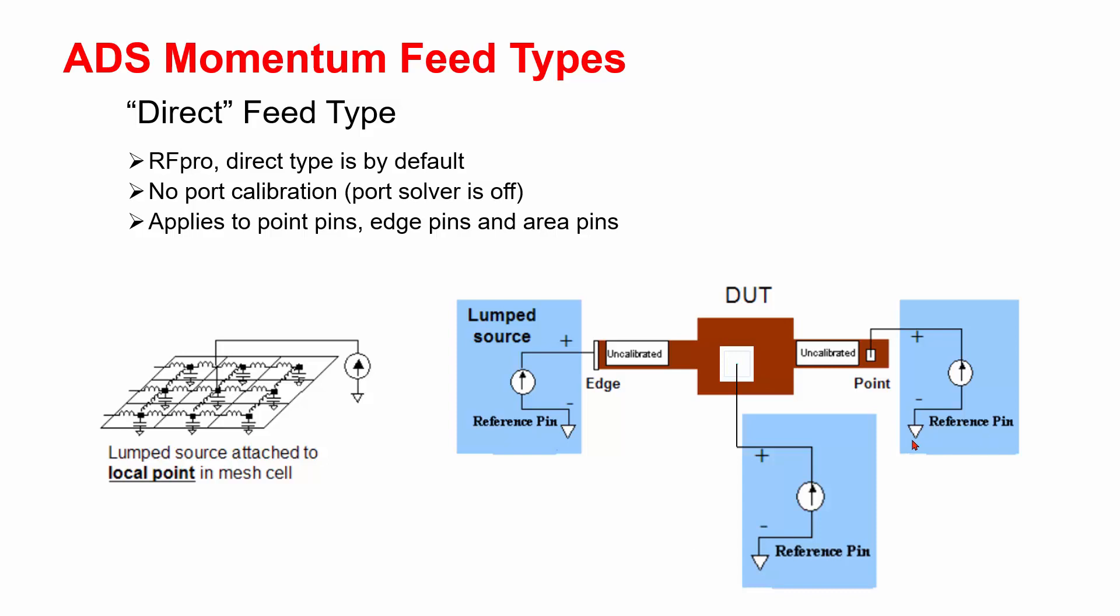If you have a pin at the inside of your metal, it could be either an edge pin, point pin, or area pin. For this type of port, a lumped source is applied to a local point, edge, or area.